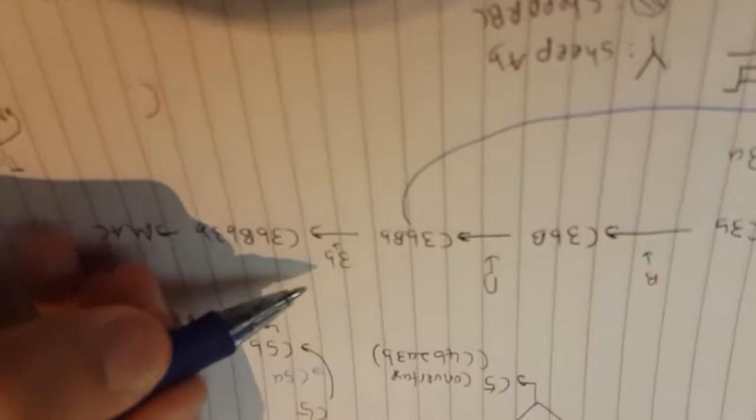As for the alternative pathway, the alternative pathway is spontaneous where C3 forms C3b and C3a, and C3b forms C3bBb via the combination of factor B and C3b via factor D, which is a C3 convertase and can catalyze the spontaneous reaction I spoke about earlier. C3bBb3b forms via C3b and this is a C5 convertase.